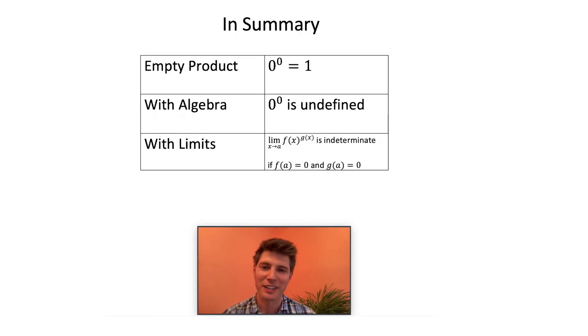So in summary, the empty product says that zero to the zero equals one, because if you're multiplying something by zero zeros, you're not going to change the number. So that's the same thing as multiplying it by one. Next, algebra says zero to zero is undefined. Algebra offers no definition for zero to zero. If they're not going to give me a definition, I'm going to refer back to the one that I've already accepted. It comes from the idea of the empty product.